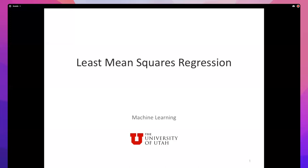Today's lecture is about least mean squares regression - a switch from what we've been doing. So far we focused on classification, predicting one label out of a set. In particular, binary classification. Today, regression is about predicting a real number. Keep that distinction in mind - don't use a perceptron for a regression problem or mean squares for a classification problem.